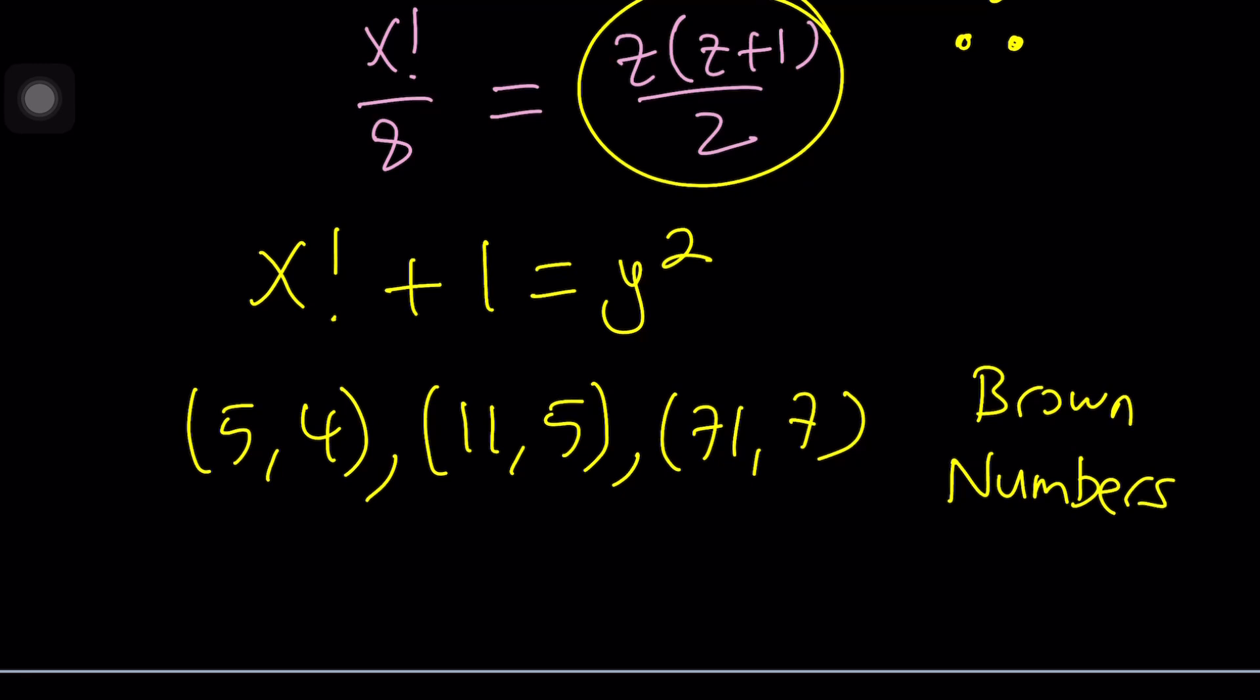You see a lot of interesting facts about these numbers. Computationally there were no solutions found up to one quadrillion. What is quadrillion? Think about it. You have the million and the billion and the trillion and then you have the quadrillion. Is it 10 to the power 15 or 10 to the 18? Something like that.